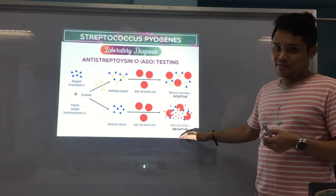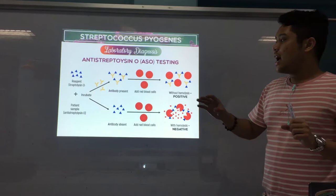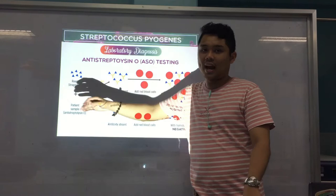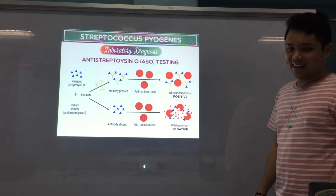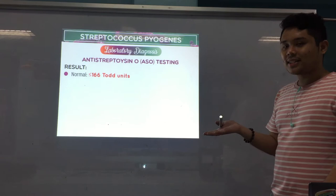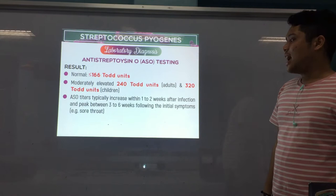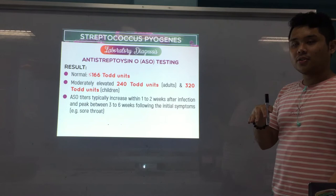The titer is expressed in Todd units if using the standard streptolysin O reagent, or in IU per ml if using a WHO standard. The titer is the reciprocal of the highest dilution without hemolysis. ASO titers typically increase within 1 to 2 weeks after infection and peak between 3 to 6 weeks following the initial symptoms.